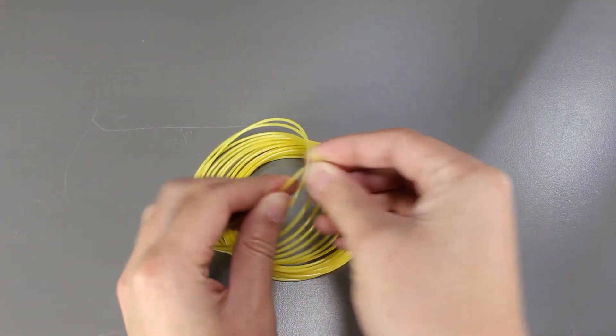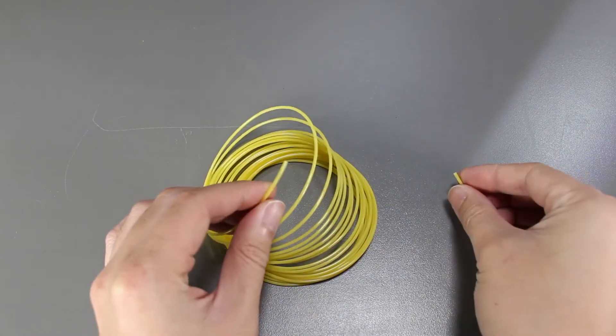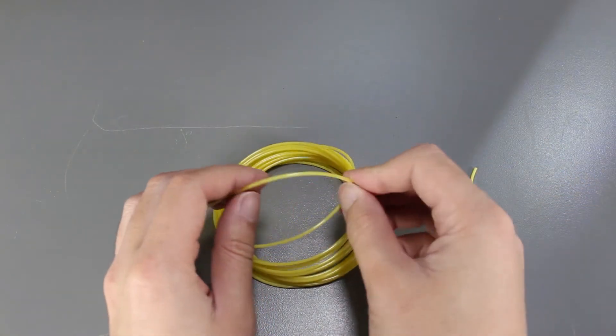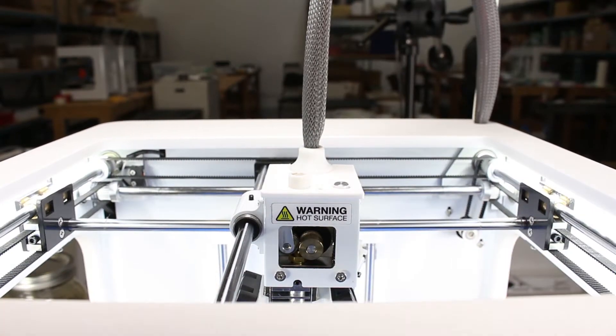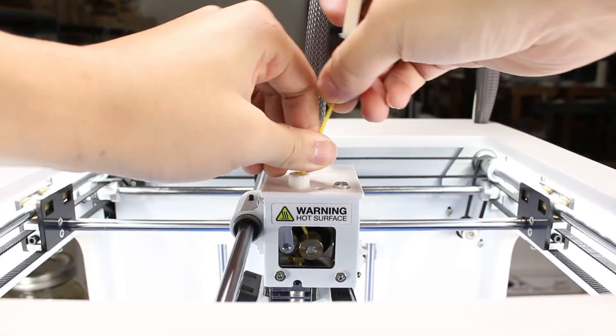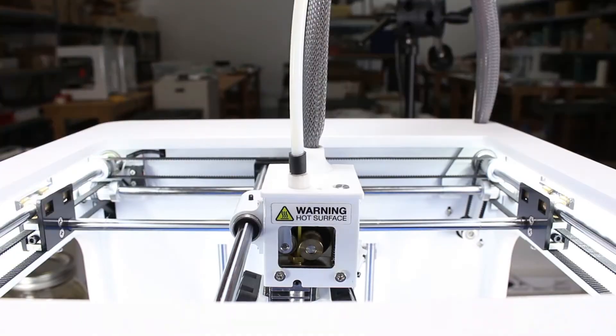We can see now that it is actually a lot more brittle than before and I can just snap it with absolutely no effort at all. Now let's try printing with it now. We'll put it into the printer and then we'll print the whistle out.